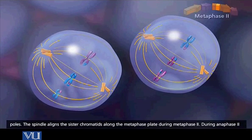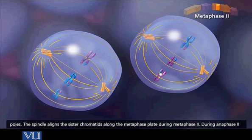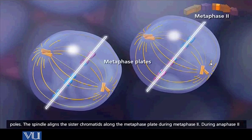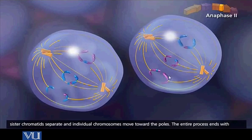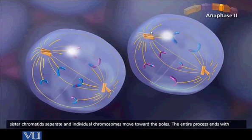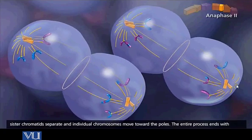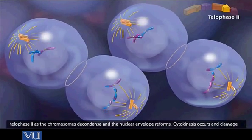Here we have metaphase II. Please note that sister chromatids are not identical, whereas in mitosis the sister chromatids were identical. Since some of the chromatids had exchanged their genetic information with their homologous chromosomes during crossing over, they are not identical. As the process continues into anaphase, the centromeres separate and the chromosomes go to the opposite poles along with the centrosome.